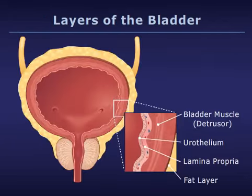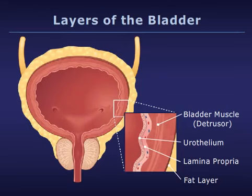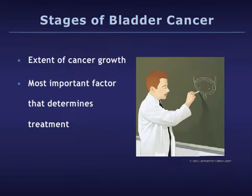This slide reviews the four layers of tissue that make up the bladder. The urothelium, also called the transitional epithelium, lines the bladder and is in contact with the urine. Over the urothelium lies the lamina propria, a layer of connective tissue and blood vessels. Over the lamina propria lies the bladder muscle or bladder wall, and over this muscle lies a layer of fat.